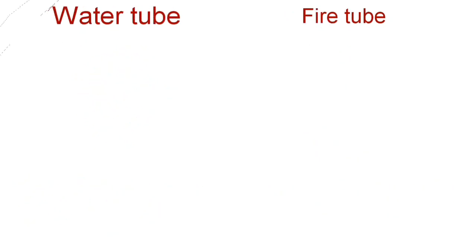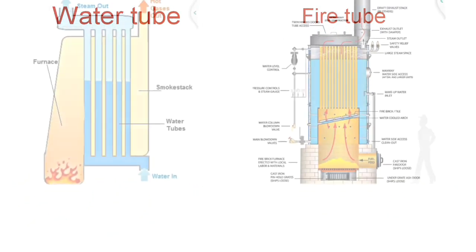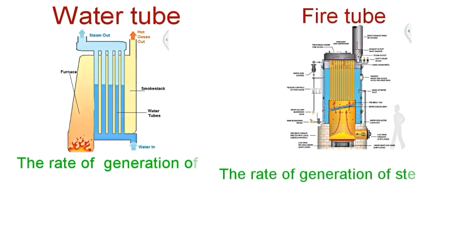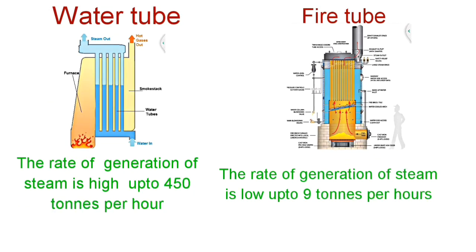The rate of generation of steam in a water tube boiler is high, up to 450 tons per hour, whereas in case of a fire tube boiler the rate of generation of steam is low, that is up to 9 tons per hour.